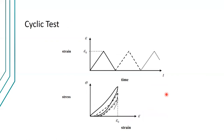There's another test called a cyclic test. In this test, you apply a varying strain in cyclic loads — apply a strain, remove it, apply again — cycling over time. You measure the effect on stress (or vice versa, with stress as the cyclic input and strain as the measured output). We call this cyclic test or cyclic loading.